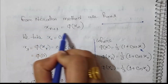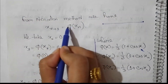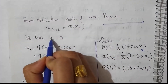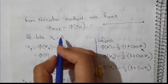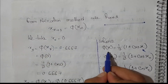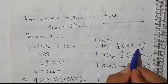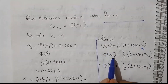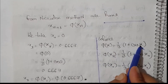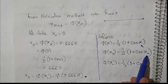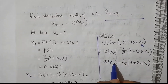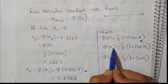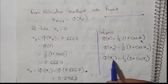The iteration formula is x_(n+1) = phi(x_n). We set the initial value x₀ = 0. The function phi(x_n) is (1 + cos(x_n)) / 3. So starting with x₀ = 0, we apply the iteration formula to find x₁.